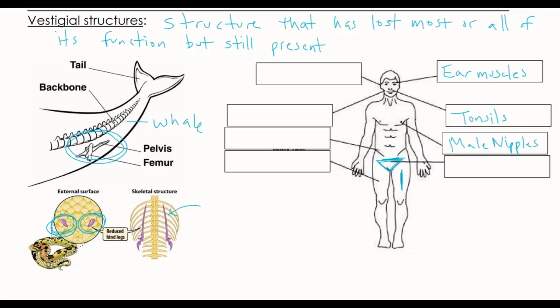Other vestigial structures in people would be male nipples — men do not need them, but they do in fact have them. Another one is a tailbone. We obviously do not have a tail, but that bone is still present, so maybe at one time some of our ancestors potentially had a tail or were starting to develop one. We also have body hair. We do not need body hair at this point — we have clothes and blankets — but we still have it for that outward protection that maybe we needed in the past.